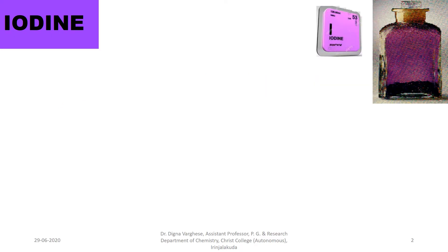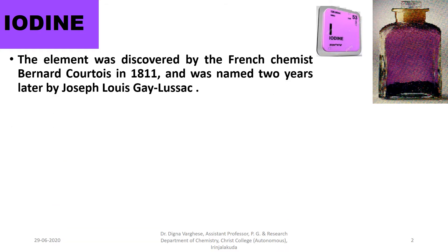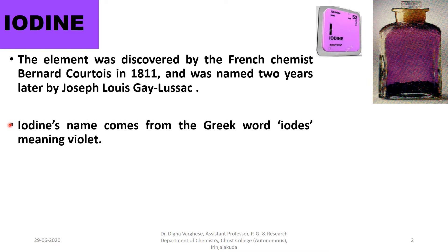The atomic number of iodine is 53, the chemical symbol is I, and the mass number is 126. The element was discovered by the French chemist Bernard Cotiers in 1811 and was named two years later by Joseph Louis Gay-Lussac. Iodine's name comes from the Greek word 'iodes' meaning violet.